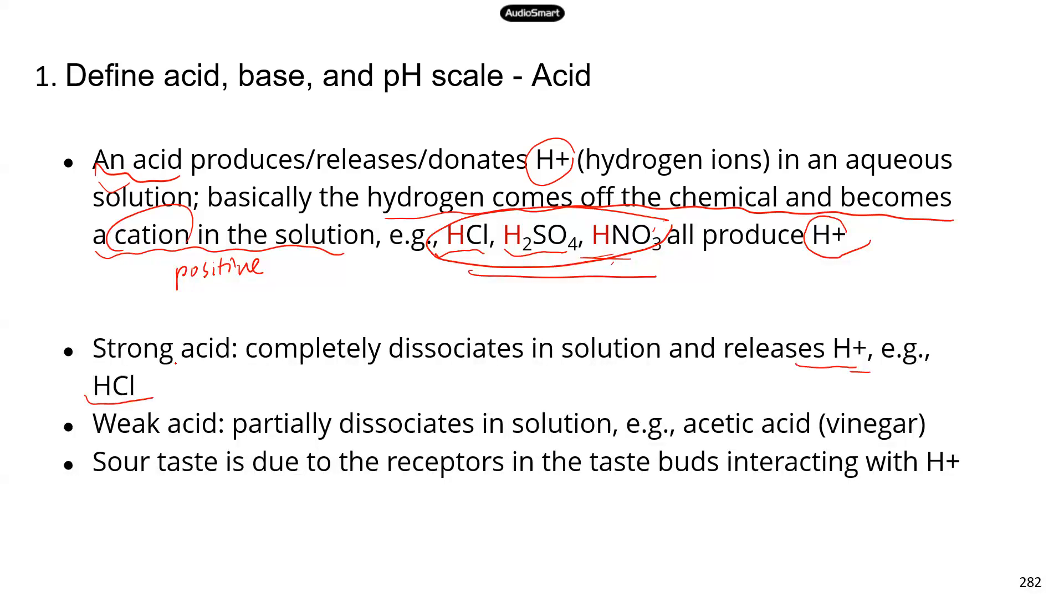A weak acid is something that partially dissociates. Because it only partially dissociates, it doesn't release as much hydrogen ion. That's why it's a weak acid. A very common example of a weak acid is acetic acid, and that's really just the vinegar that you use in your kitchen.